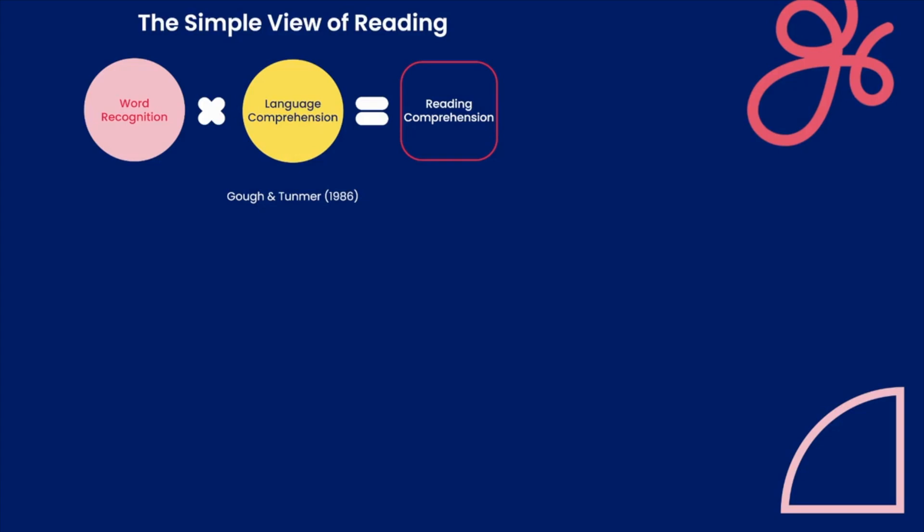Let's begin. If a child struggles with word recognition, represented by the 0, but has strong language comprehension, represented by the 1, then the product of 0 times 1 is 0, which means poor reading comprehension.